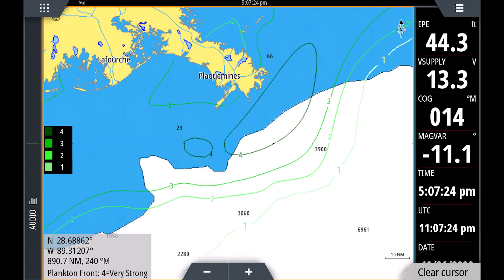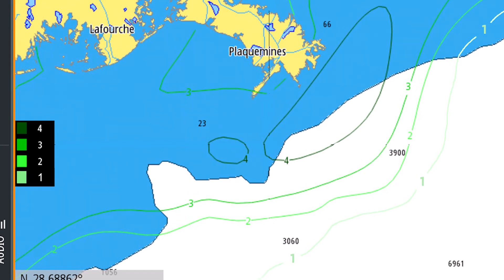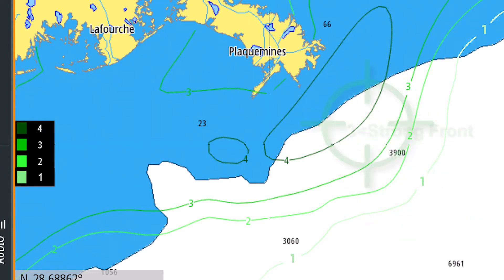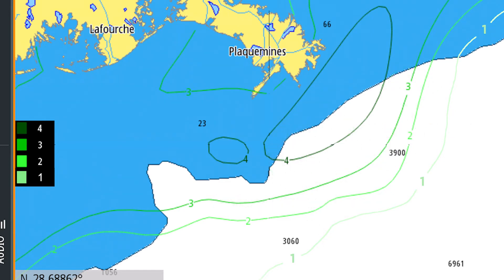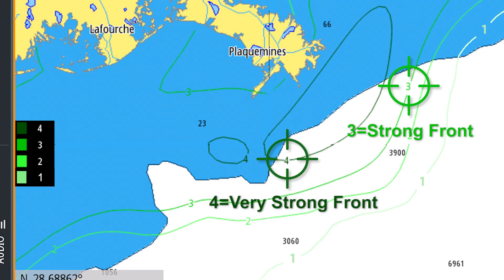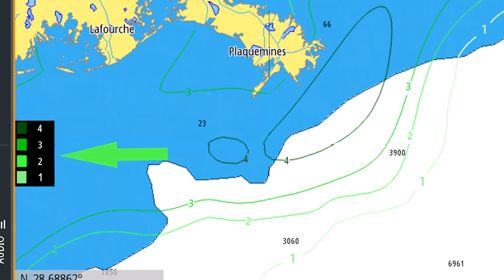Strong plankton fronts indicate areas for gamefish feeding activity. Like sea surface temperature fronts, plankton fronts are based on a scale from one to four: one being a weak front, two being moderate, three being strong, and four being a very strong front. Ideally, you're looking for strong or very strong fronts, as these are typically the most productive areas. If you look at the legend, areas with the weakest fronts are shaded in light green, and areas with the strongest fronts are shaded in darker green.